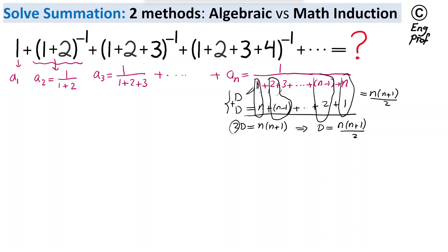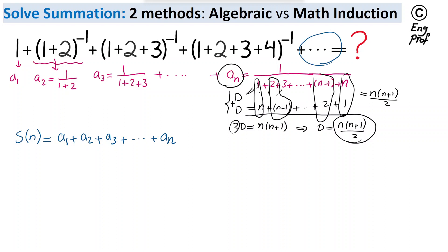So I can write the general term in the form of 2 divided by n times n plus 1. In the finite version of this summation, s of n stops at a1 plus a2 plus a3 plus up to an. In this finite version, I can rewrite the terms: instead of 1, I write 2 divided by 1 times 2; instead of 1 over 1 plus 2, I write 2 divided by 2 times 3.